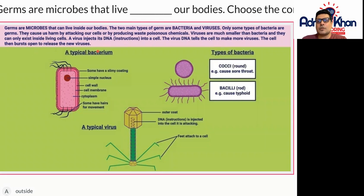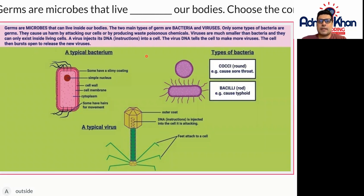The two main types of germs are bacteria and viruses. Viruses are smaller than bacteria and can only exist inside living cells, whereas bacteria can exist outside or on top of living cells.